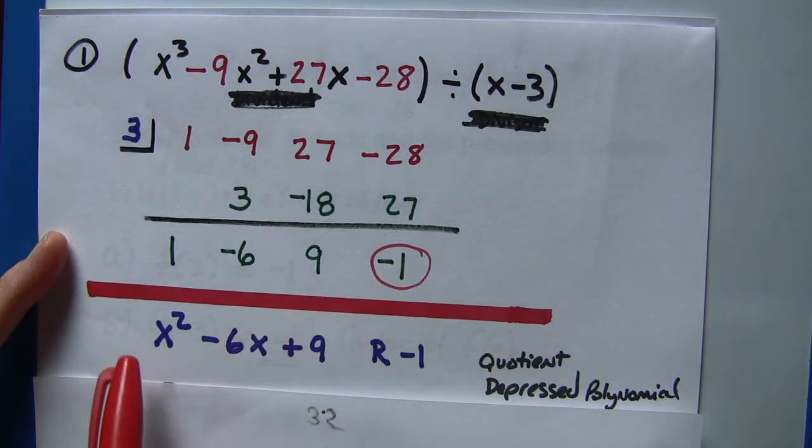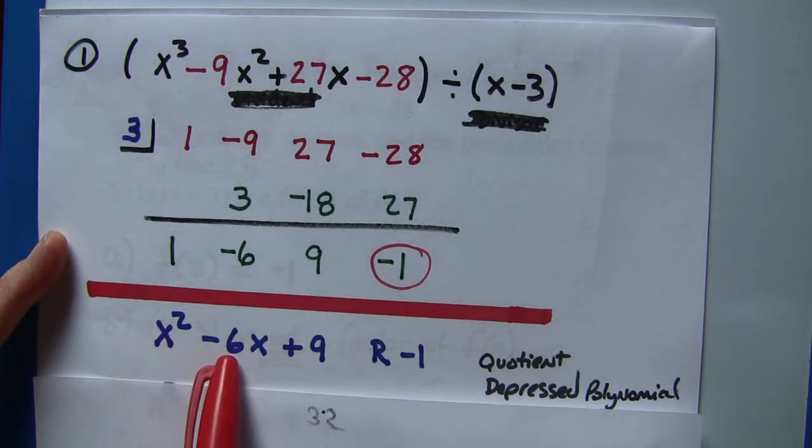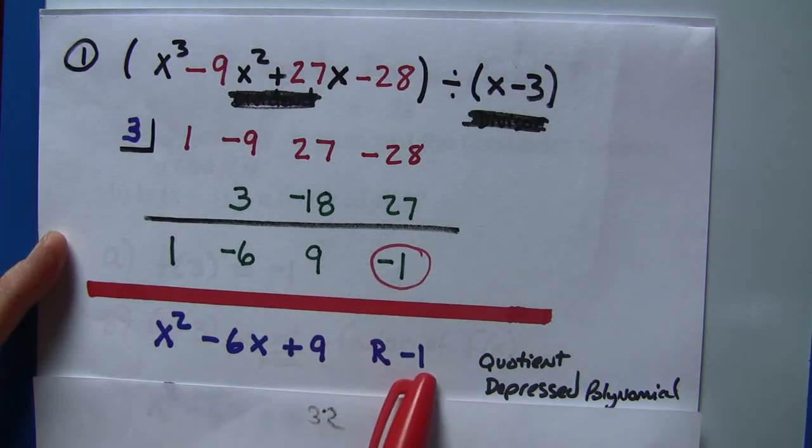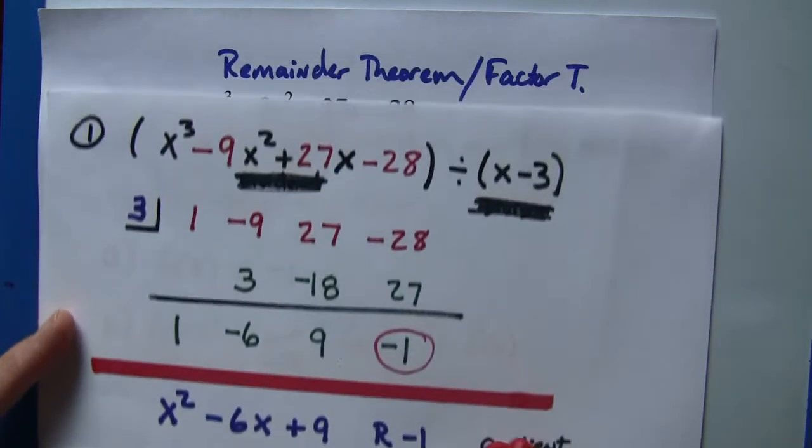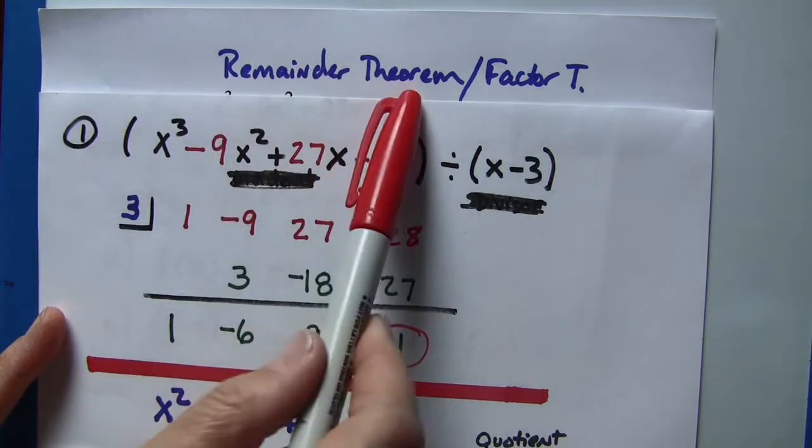So if we just wanted to write the depressed polynomial, we'd go x² - 6x - 9 with remainder of -1.